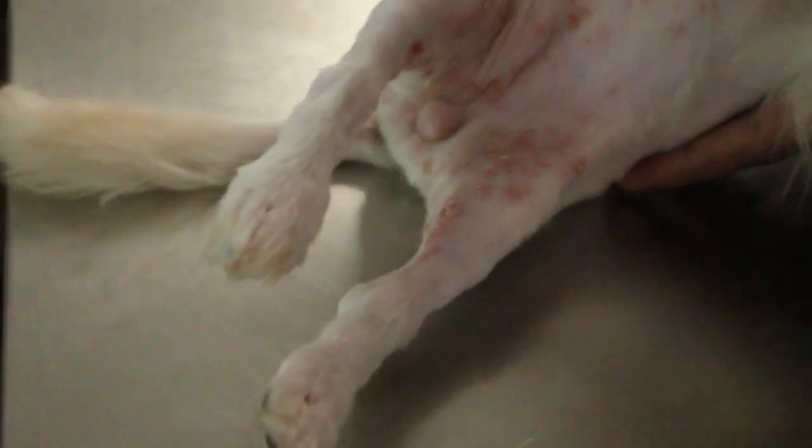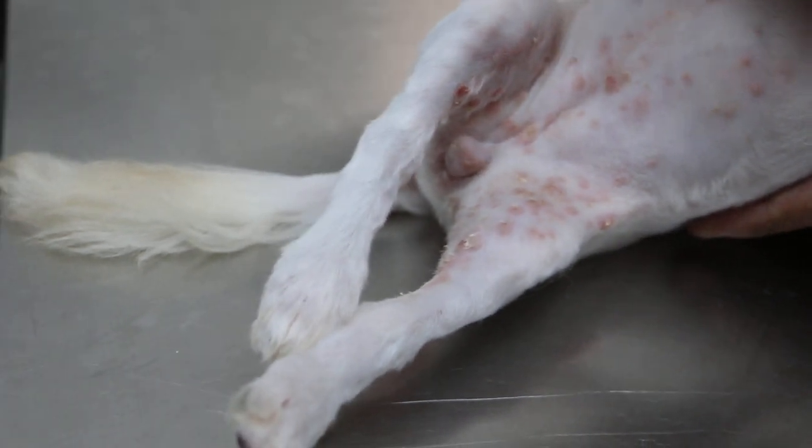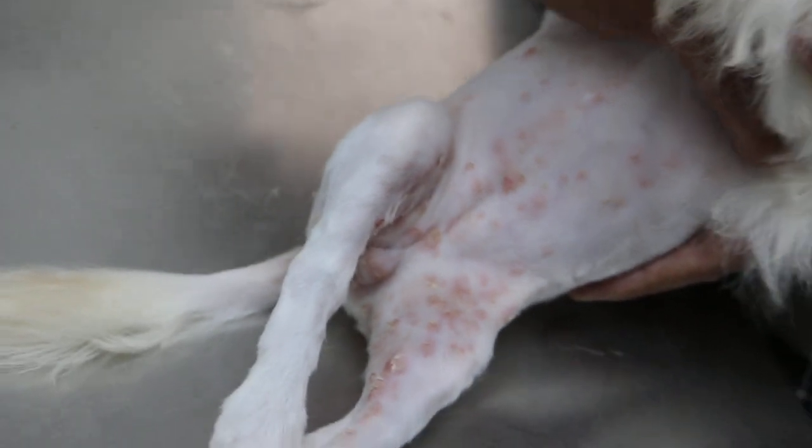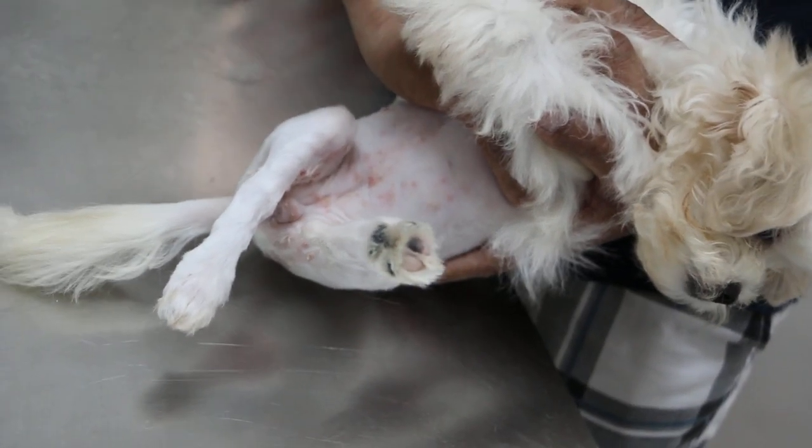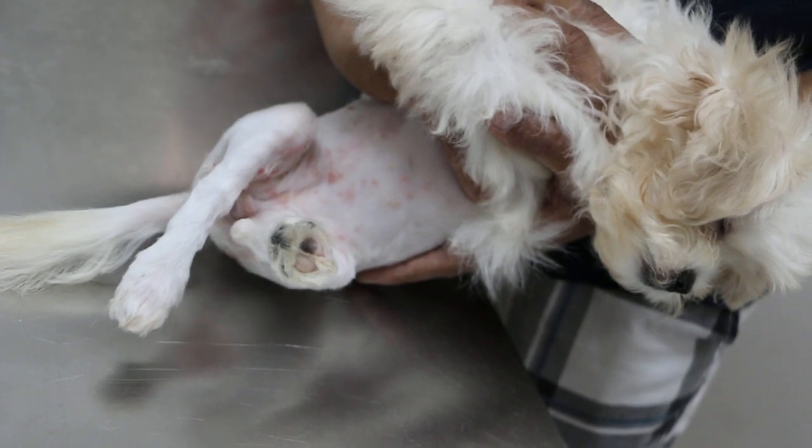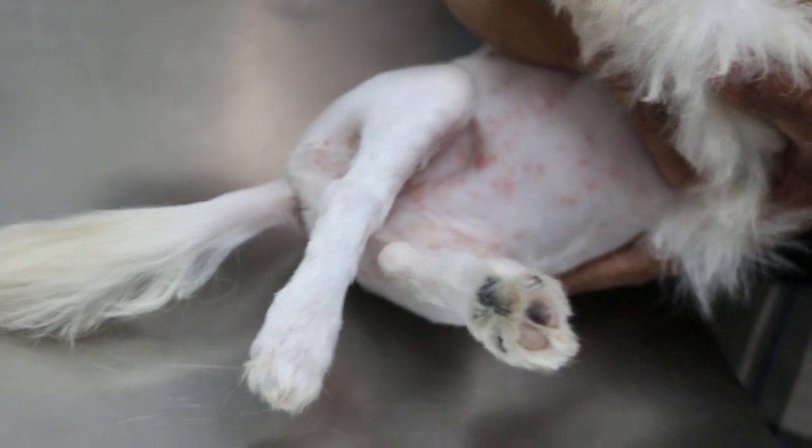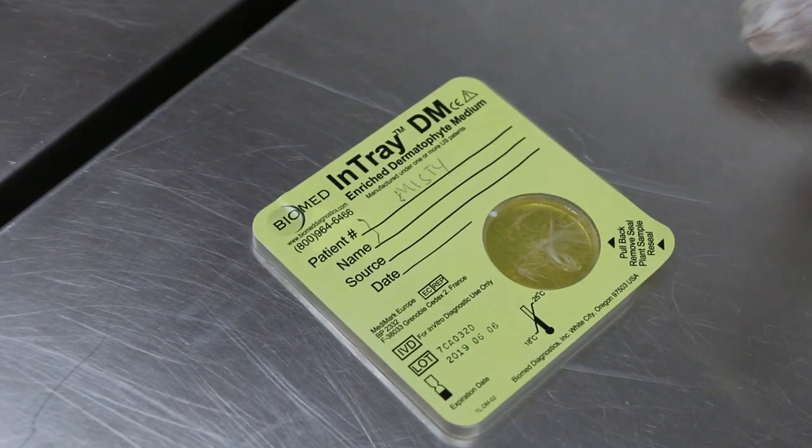We are also doing a culture. This culture will show results in one week's time because it takes one week for the ringworm to grow. I'll show you this culture. We put the hairs in, and in one week it will confirm if it's ringworm. But we have already seen it's likely ringworm.